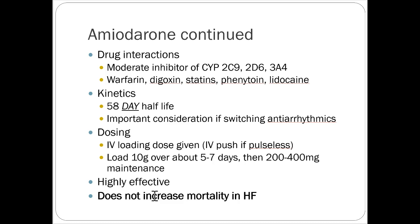Dosing is once daily. Even with a 58-day half-life, we dose it once daily for convenience. You can load amiodarone with a big IV loading dose — about 10 grams over five to seven days — and then do 200 to 400 milligrams per day for maintenance therapy. This is a highly effective antiarrhythmic despite its side effects and interactions. It also does not increase mortality in heart failure, making it a good option for patients with both an arrhythmia and heart failure.